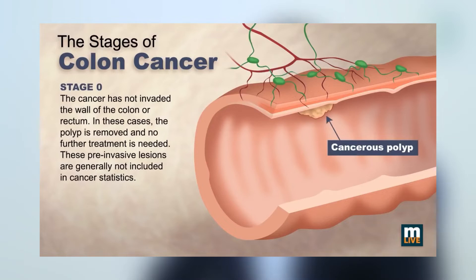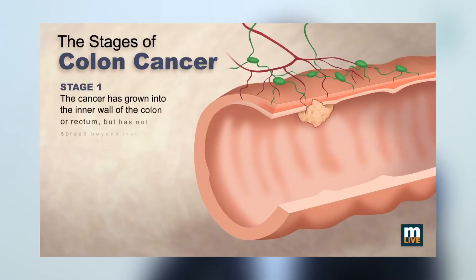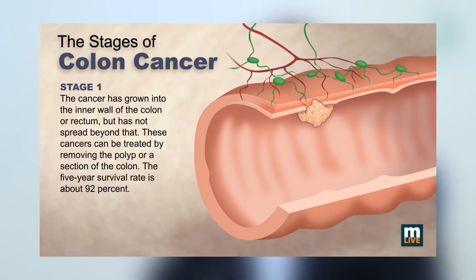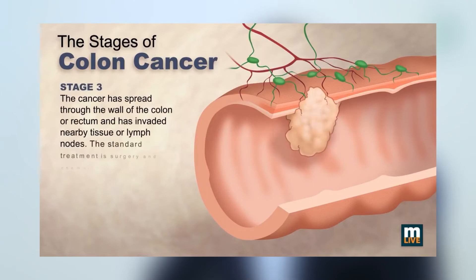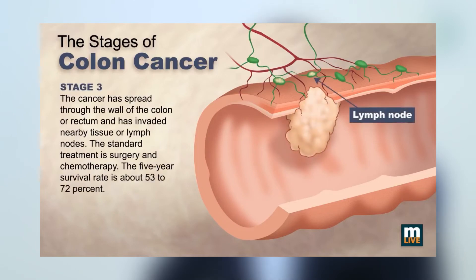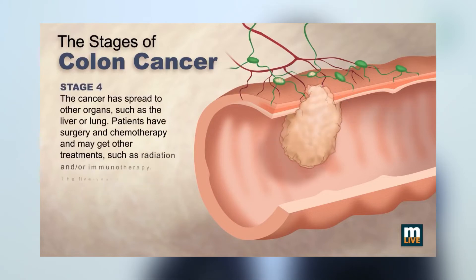In the pre-cancerous stage, there are only polyps, and once the polyps transform into cancer, we classify them into four stages. In stage 1 colorectal cancer, the cancer is limited to the intestinal wall and has not spread to any of the surrounding lymph nodes or any other organs. In stage 2, the cancer has completely involved the intestinal wall but yet has not spread to any other organs. In stage 3, the cancer has spread to the surrounding lymph nodes, which are small glands which drain the part of the intestine. And in stage 4, the cancer has spread to other organs like liver, lung or bone.